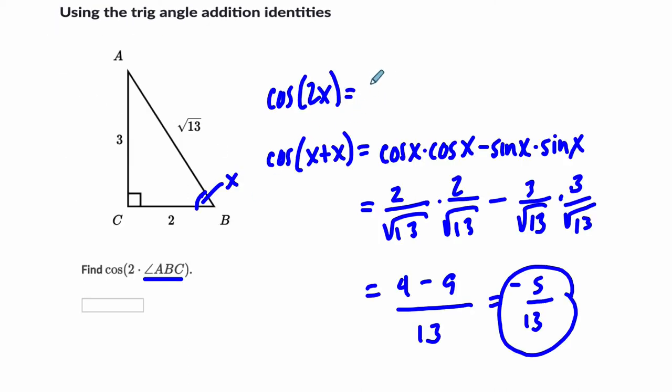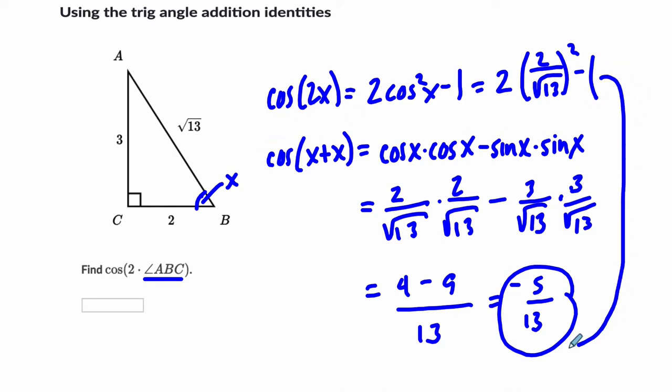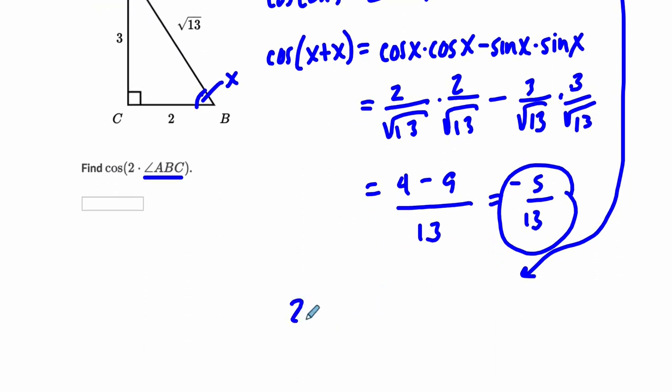We also use a double angle formula. There's different versions of the cosine double angle formula, but for example, you could say equals twice the cosine squared of x minus 1. That's the same thing as twice, so find cosine of x adjacent over hypotenuse of 2 over radical 13, and we're squaring that and then subtracting 1. So what does that equal? I'm going to write this down here while I have some room. We're going to get negative 5 thirteenths.